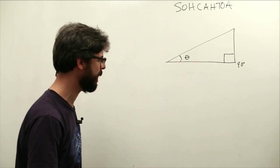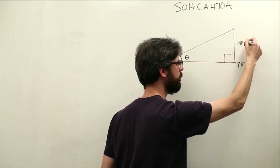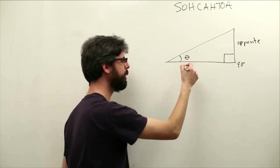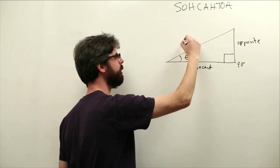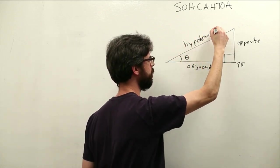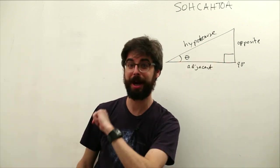Okay, so we have this angle theta, and this side of the triangle, this is the opposite side. This is opposite from the angle. This is the adjacent side. It is adjacent to the angle. And this is the hypotenuse. Okay, so here's our right triangle. Angle, adjacent, opposite, hypotenuse.